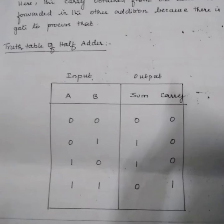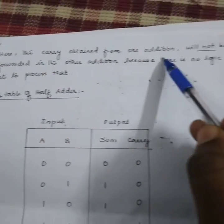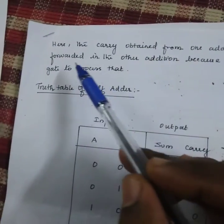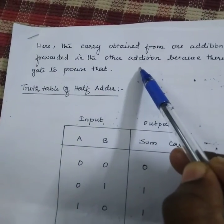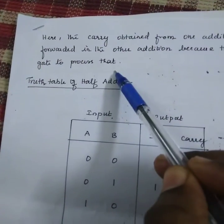Let's see the truth table here. Here the carry obtained from one addition will not be forwarded to the other addition. This is the limitation, because there is no logic gates to process that. That's why we need to go for the full adder.